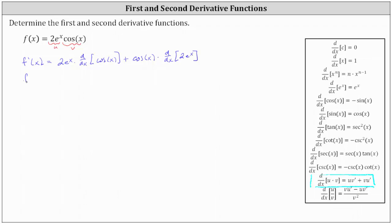f prime of x is equal to two e to the x times the derivative of cosine x, which is negative sine x, and then plus cosine x times the derivative of two e to the x with respect to x, which is two e to the x.